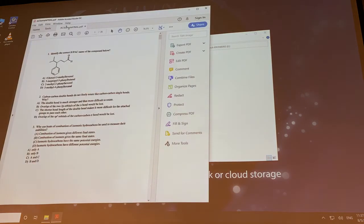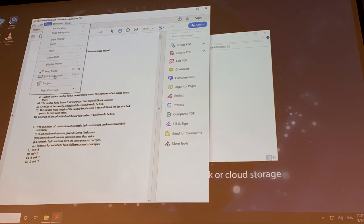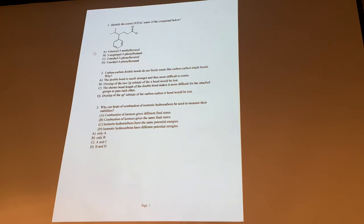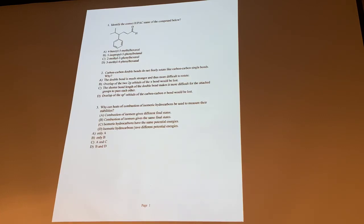Let's click through the sample final. The key is on the last sheet. Dr. Nielsen and I cobbled these together about 10 years ago from old ACS exams. It covers all the topics, 70 questions, similar format — always just A through D. Number 3 is a little bit tricky: heats of combustion of isomeric hydrocarbons measure stabilities because they give the same final states — same CO2 and water. B is correct, and D is correct too, because isomeric starting materials have different heats of formation.